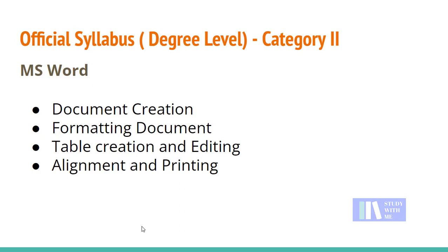For MS Word document creation, we can format, edit, and use font formatting — bold, italics, underline, and font size. We can change the paragraph alignment, print the document, set the page layout to portrait or landscape, and use watermark, text box, word art, etc. This is already covered.